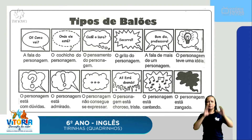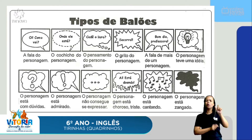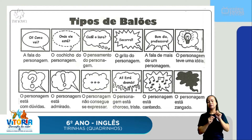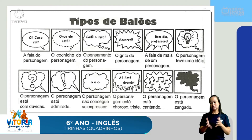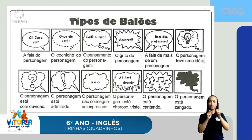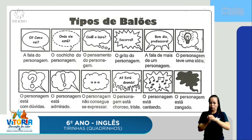O balão como nuvem com três pontinhos — reticências — significa que o personagem não consegue se expressar, fica uma espécie de mudo. O outro indica tristeza ou choro. A nuvem se desmanchando passa a ideia de dissolução. O penúltimo indica que alguém está cantando. Se não houver escrita, através dos balões você já pode identificar o que o personagem está passando. E o último quadrinho indica que o personagem está zangado, irritado.